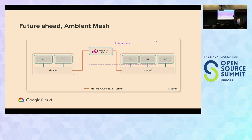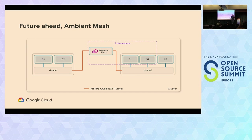The way it works: they split functionality into two different proxies. There is a node-level proxy called the ztunnel — a lightweight Layer 4 proxy that only does MTLS. It intercepts traffic coming out of containers, encrypts it into an MTLS tunnel, and sends it to the other ztunnel on the other end. Then if you want to enable L7, there will be a namespace-based proxy — not a sidecar proxy anymore — so there will be a significant decrease in the footprint. That proxy handles L7 functionalities for the whole namespace, so all containers in the namespace share one proxy instead of each having its own sidecar.